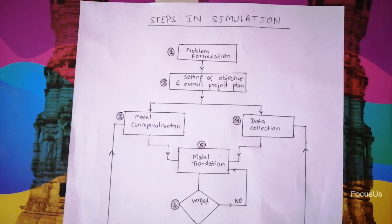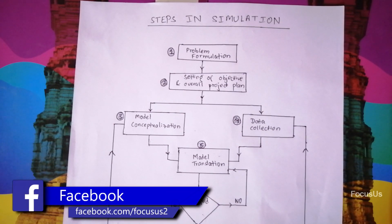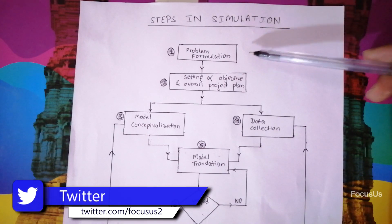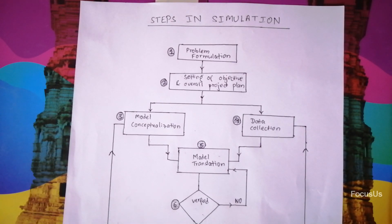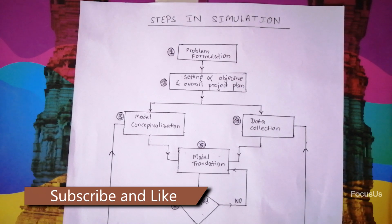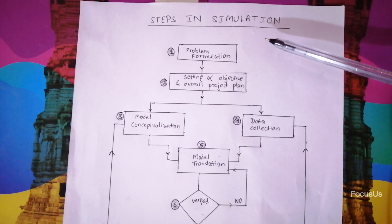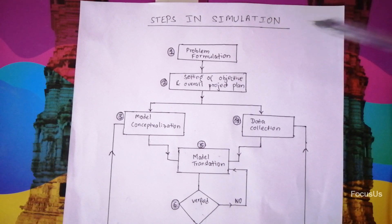There are 12 points you need to remember for steps of simulation. So if you remember this then we can easily write about steps in simulation and phases in simulation in our exams. First of all, we have the point called Problem Formulation. So of course if there is no any problem then no need of steps and solution. So we need to have the problem first. The problem must be crystal clear to the simulation analyst and formulation should also be clear to the client. This is our problem formulation, the first point.